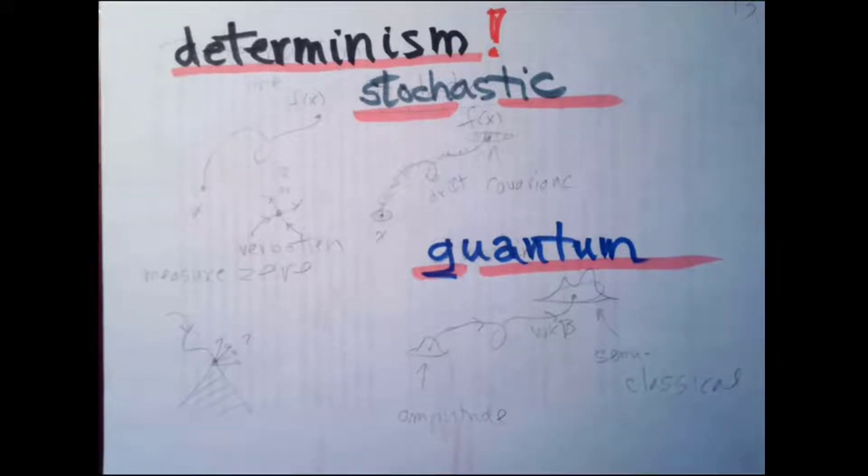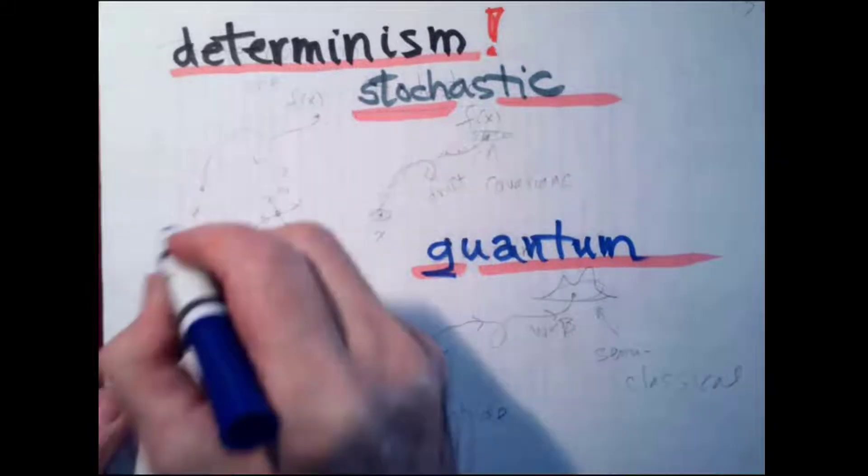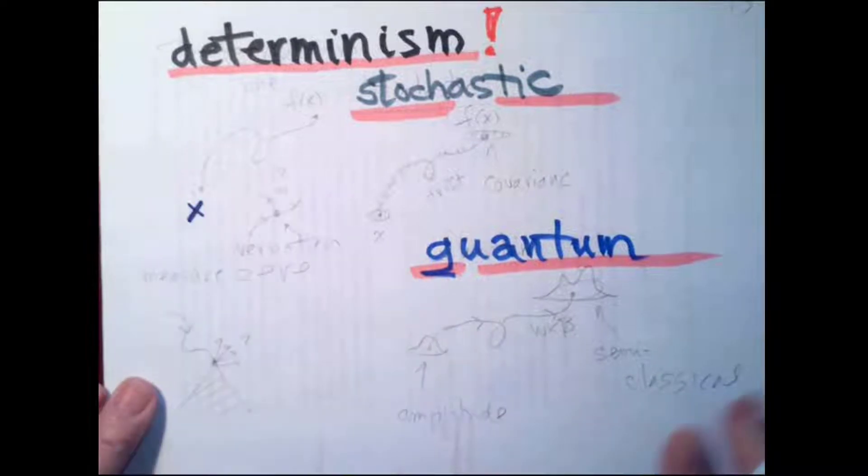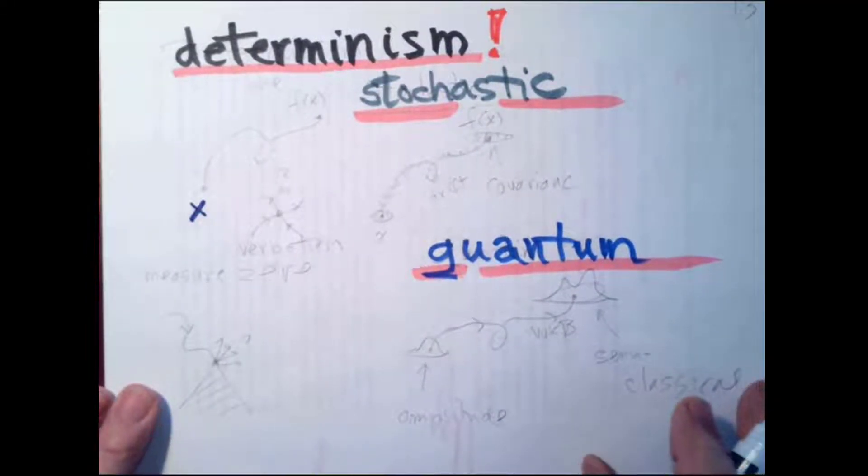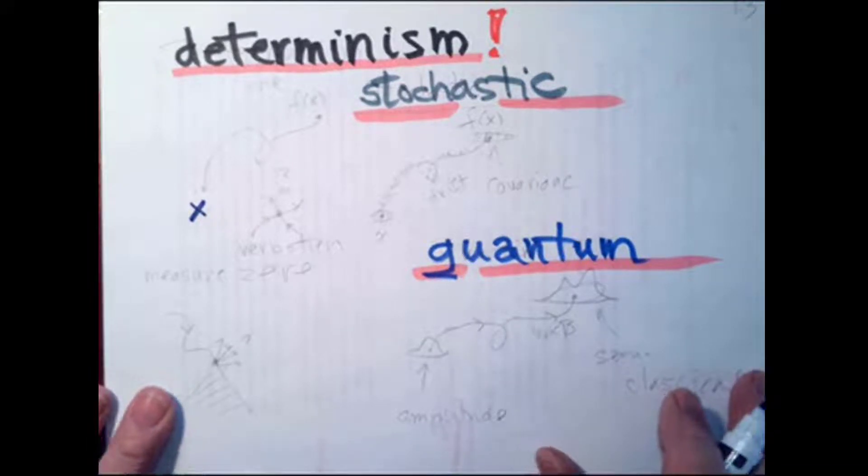So one peculiar thing about introductory books is that we pretend that we can specify the initial state to infinite precision, which we cannot. So the representative point is always finitely presented or what's called coarse grain. It's presented to some accuracy.